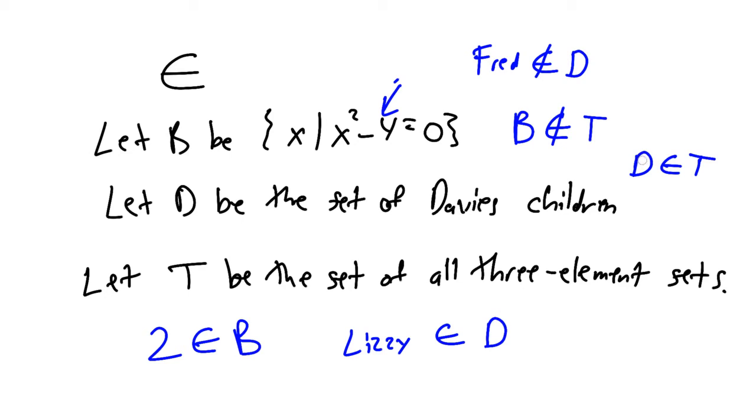Therefore, since D is a set with three elements—remember the cardinality of D is three—that must mean that D ∈ T, because T is the set of all three-element sets, and D is therefore an element of T.